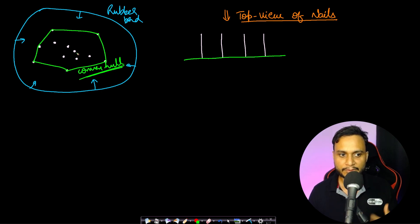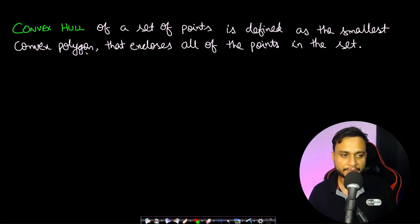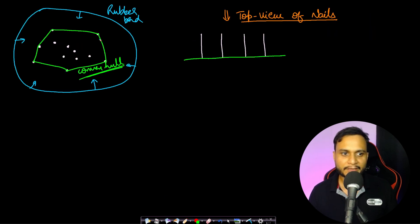This is something we want to find. Now for a formal definition, a convex hull of a set of points is defined as the smallest convex polygon that encloses all of the points in the set. So it has to be the smallest one as well and this rubber band will actually make sure that it will be the smallest one.